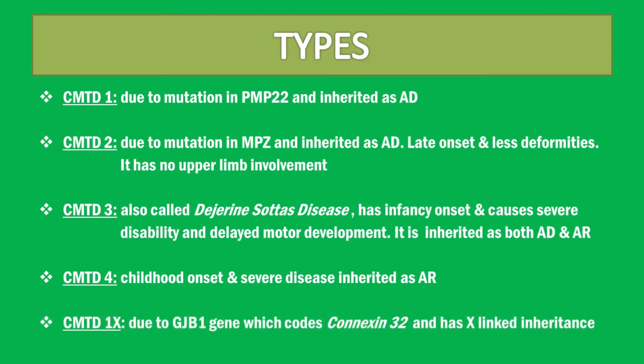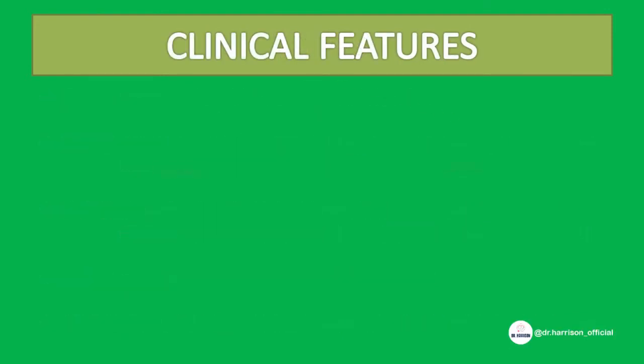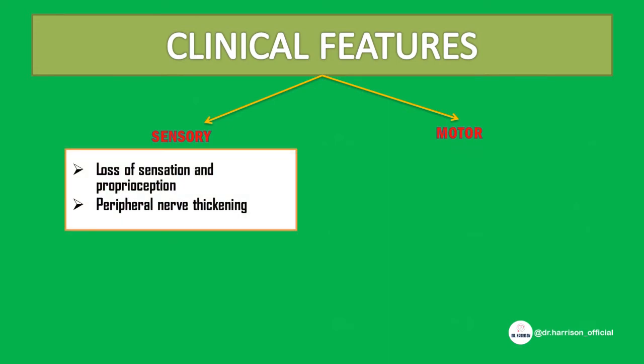CMT1X is due to the GJB1 gene, which codes for connexin 32. The clinical features are due to demyelination of both sensory and motor nerves. On the sensory side, there is loss of sensation and proprioception, and sometimes peripheral nerve thickening can be seen.